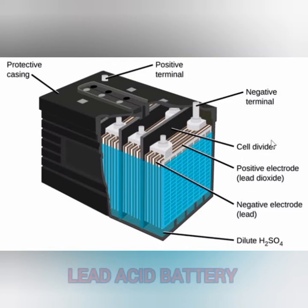The SO4 ions move towards the cathode lead and form PbSO4. The free hydrogen ions are emitted as a gas, which is poisonous and toxic for the environment. In this way, the conversion of chemical energy to electrical energy, and vice versa, takes place in lead acid batteries.